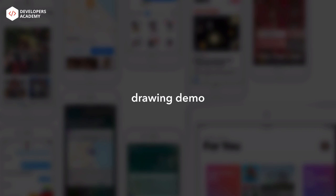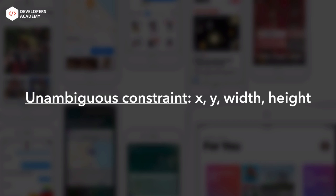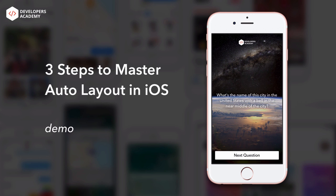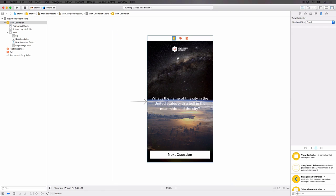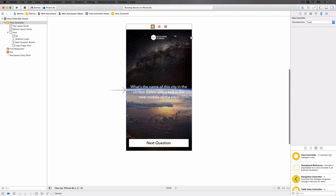This is all very abstract, but all I want you to see is: to create an unambiguous constraint, we specify X, Y, width, and height — four pieces of information. That is step number one: you learn about Auto Layout. Number two, you learn about constraints. Number three, let's go into our demo, because all that matters is our code and building apps. If you haven't downloaded the starter project yet, download it now and let's get started.